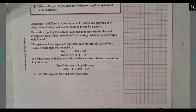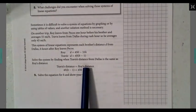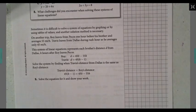It says Roy equals d equals 450 minus 55h while Travis is d equals 45 parenthesis h minus 1. It says solve each system by finding when Travis's distance from Dallas is the same as Roy's. So it says Travis's distance set equal to Roy's distance. It says solve the equation for x and show your work.